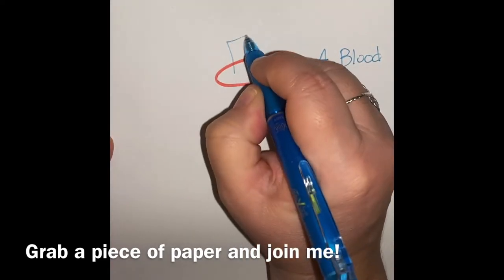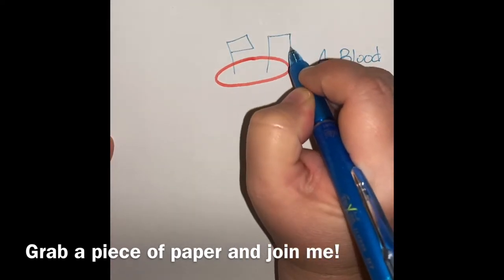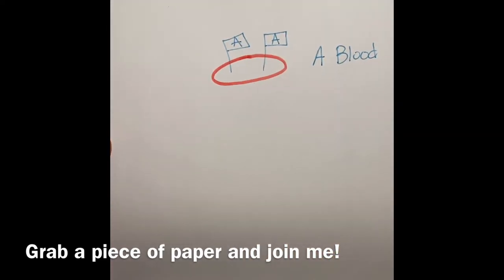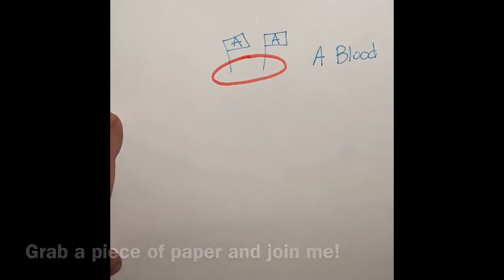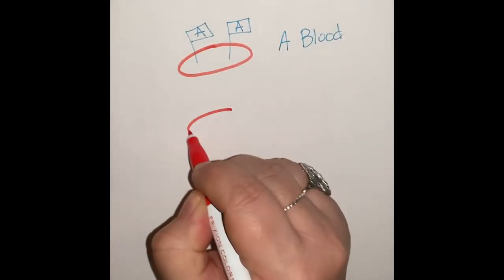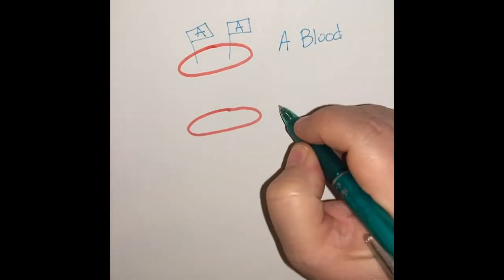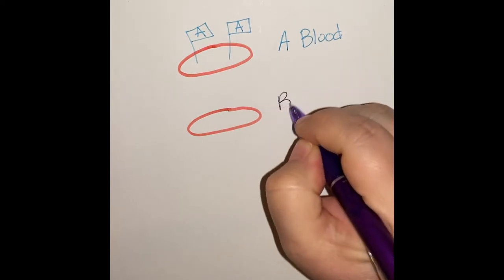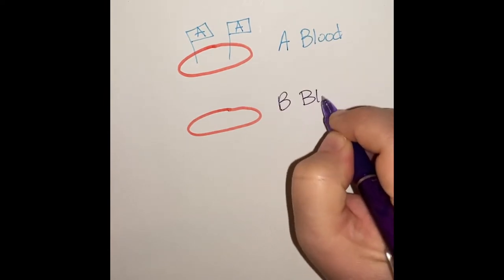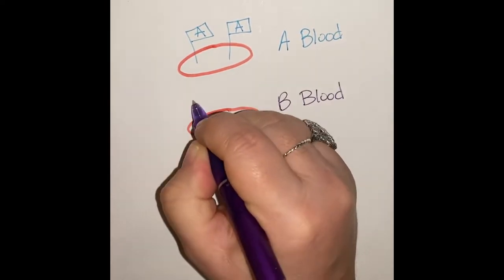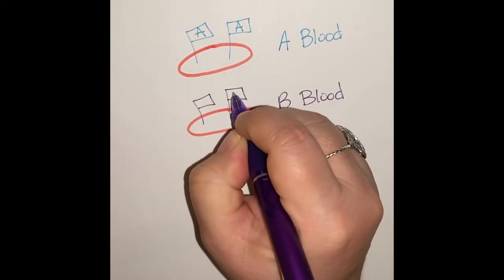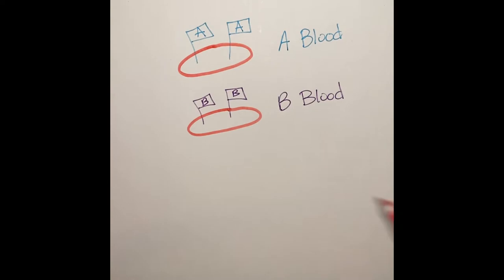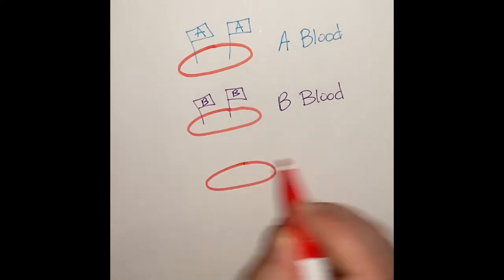If you're blood type A, you're going to have antigen A. If you are blood type B, you're going to have antigen B on your blood cell. Remember, antigens are like little flags that say, 'I'm that blood cell.'